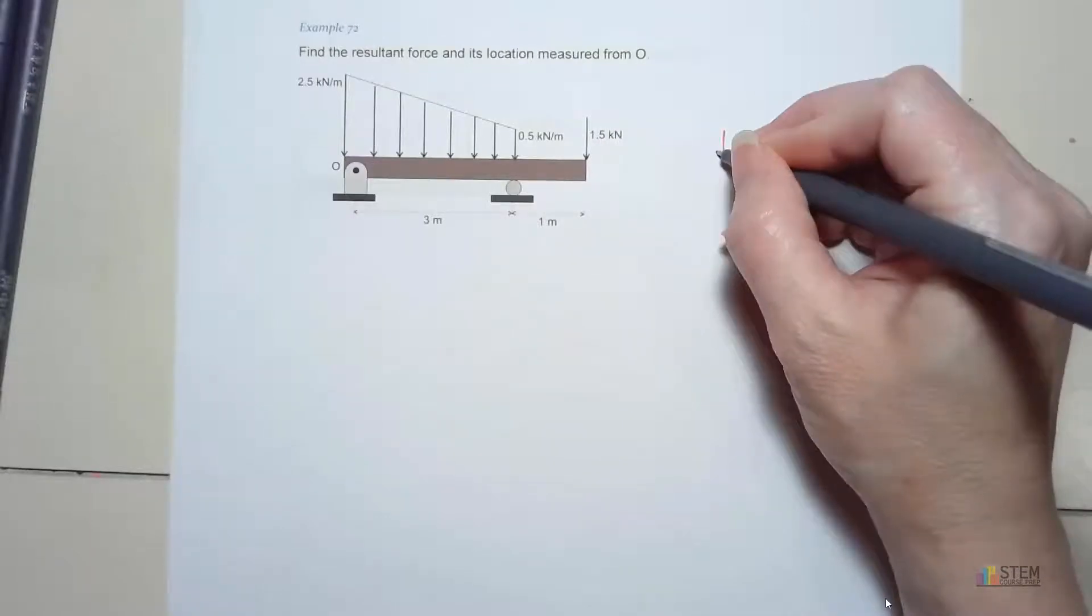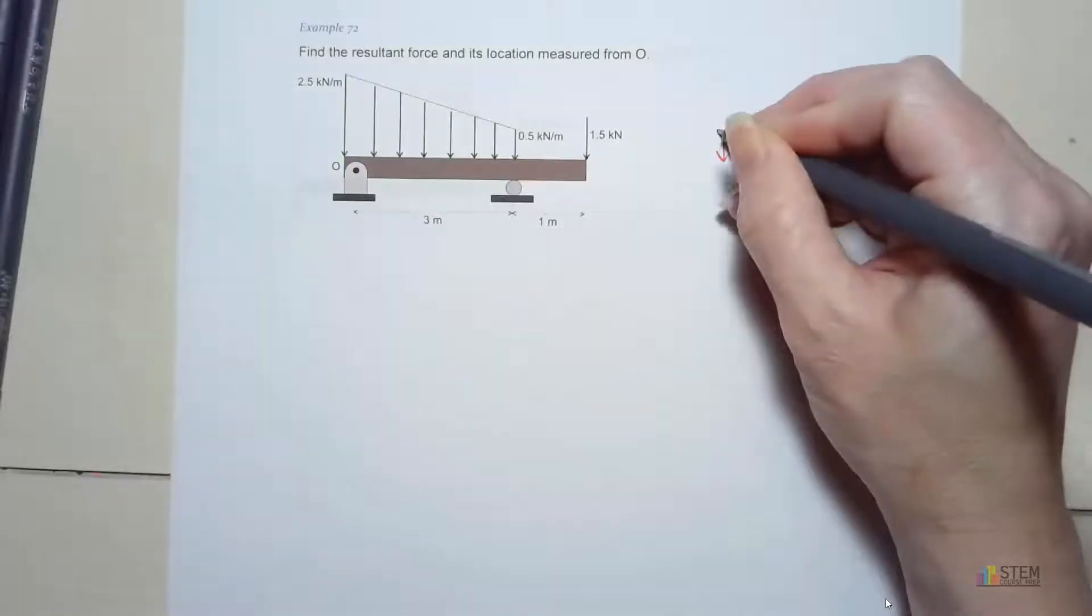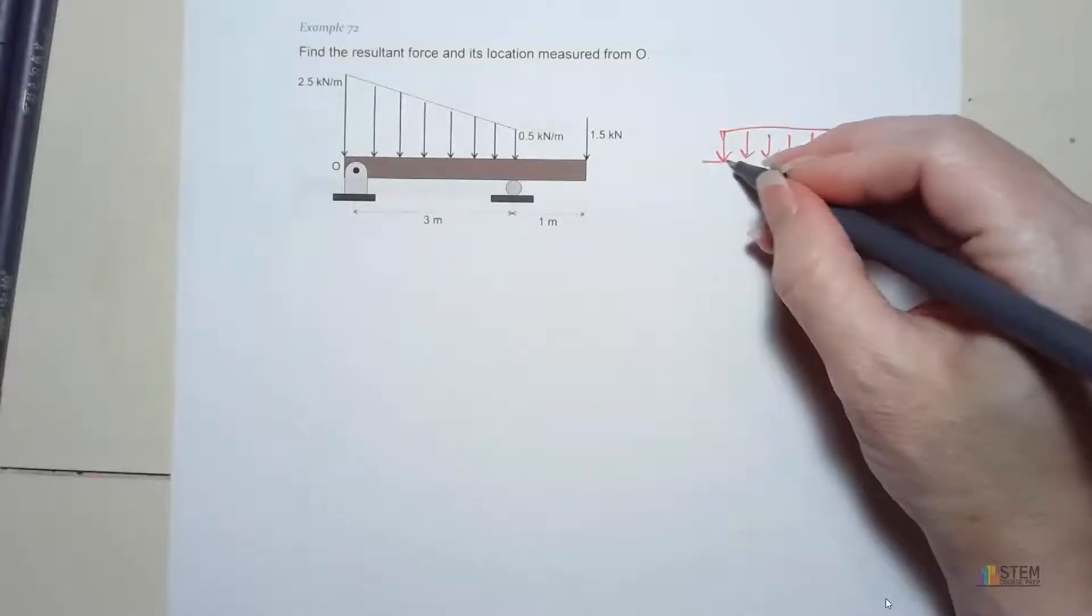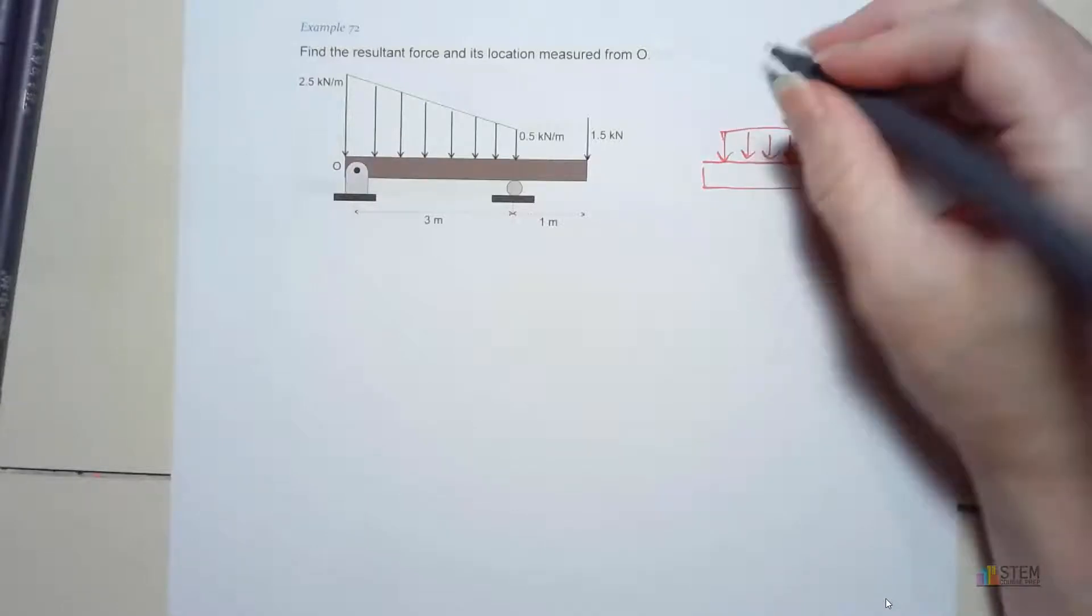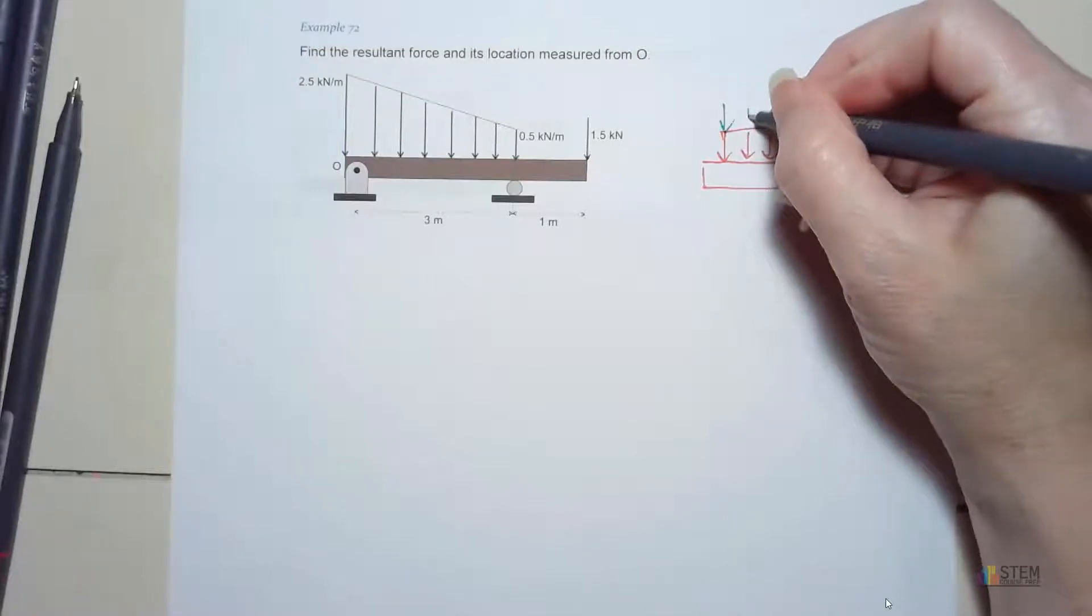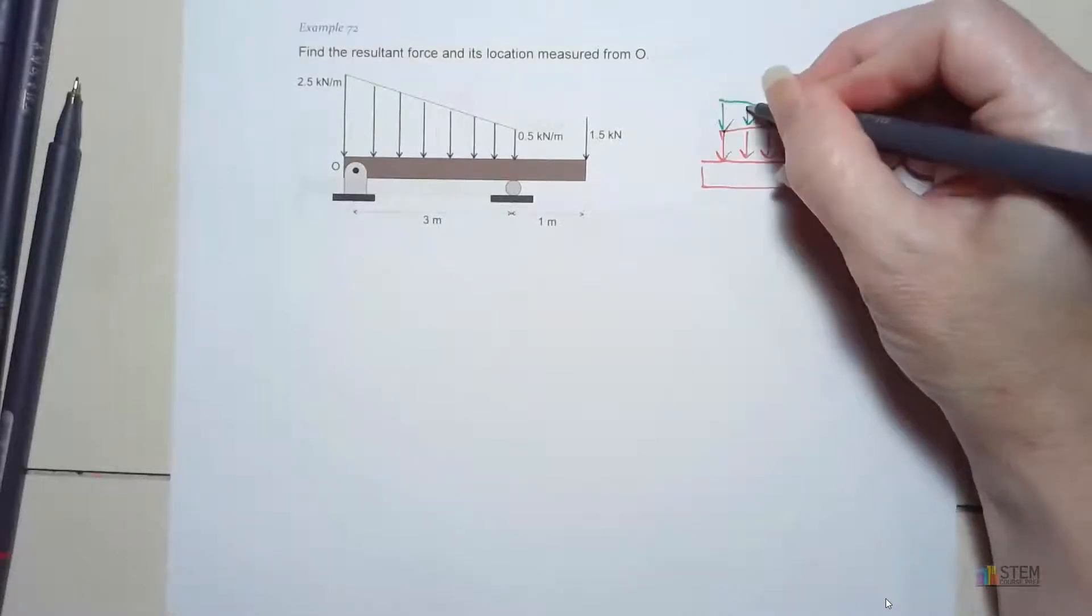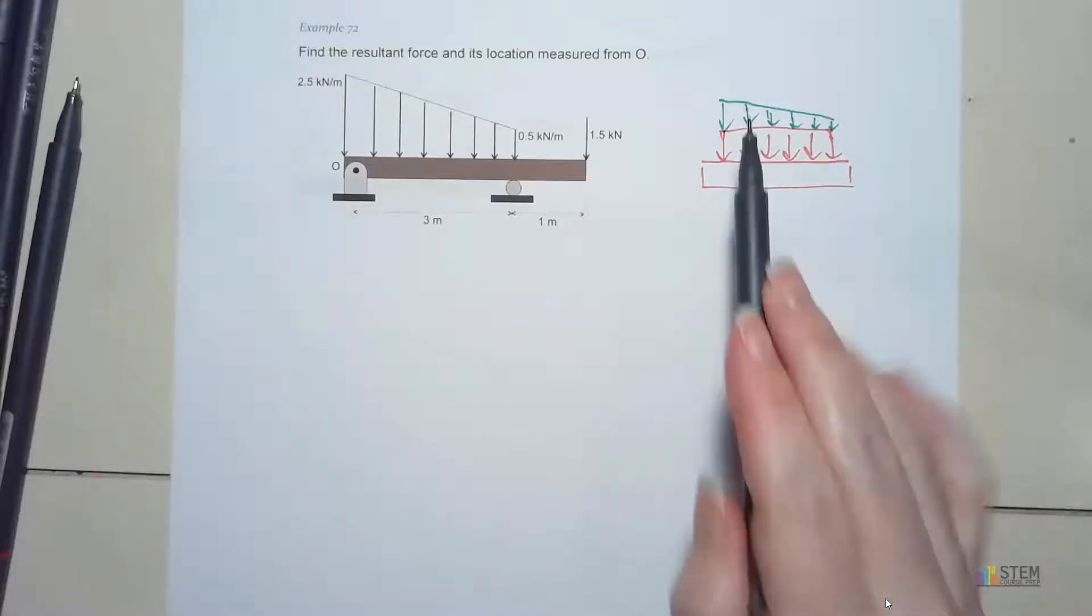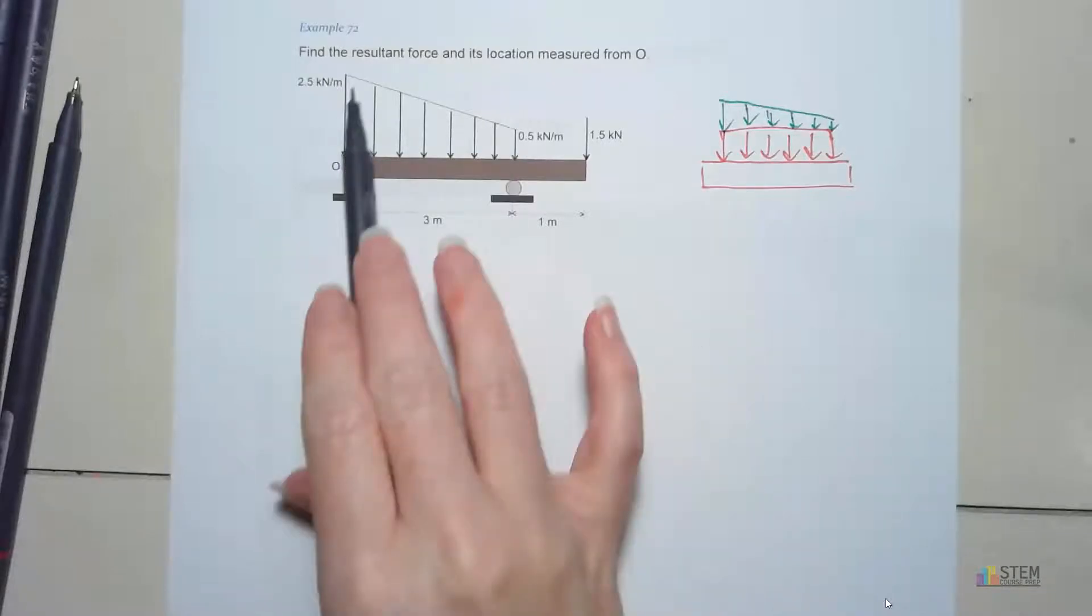Now, if you think about it, if you go back to your composite bodies stuff that we did, we could have something that looks like this, where we have the rectangular shape here on the bottom, and then up top, we've got a triangle sitting on top. This is going to be easier to do than just doing this whole thing together.